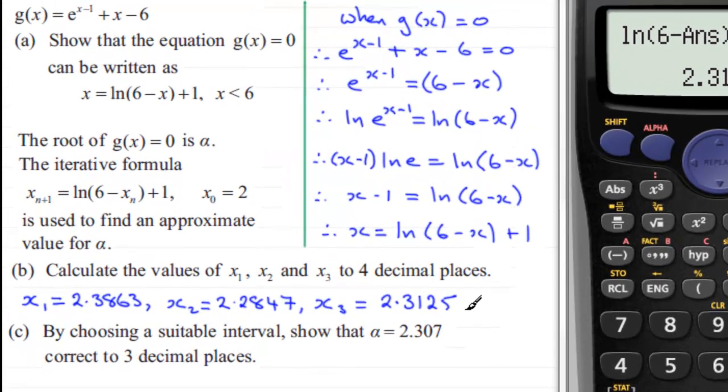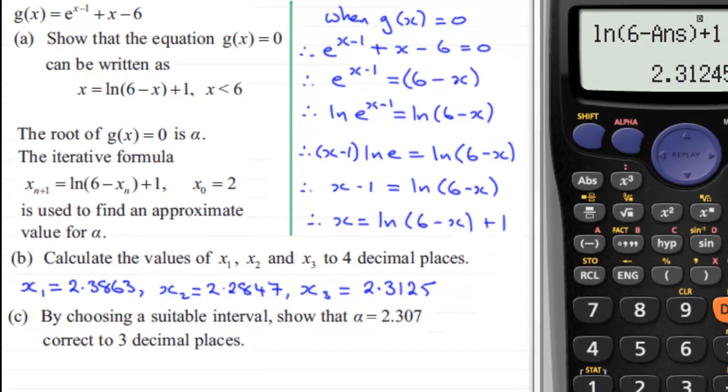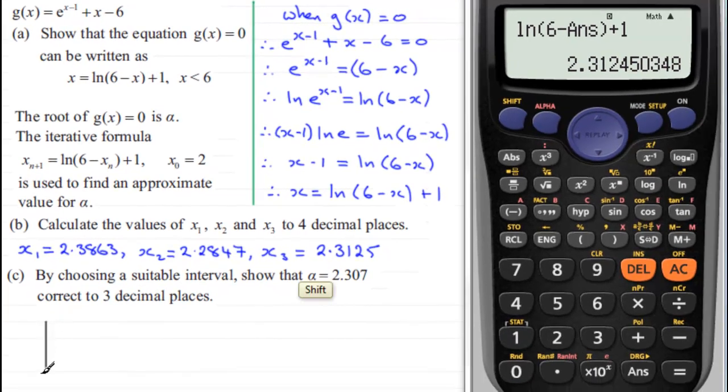Now in part c, it says by choosing a suitable interval, show that α is equal to 2.307 correct to three decimal places. And as usual, to appreciate this, just draw a sketch graph. Let's just have our axes like so. And we've got this axis as being g(x).